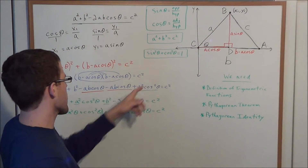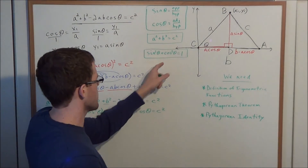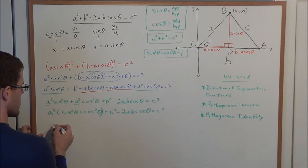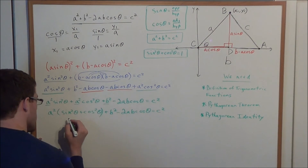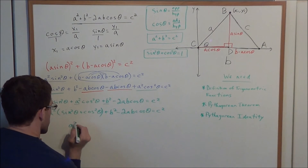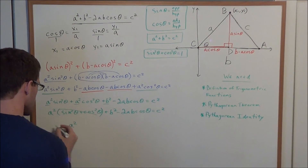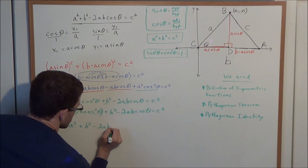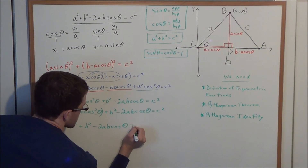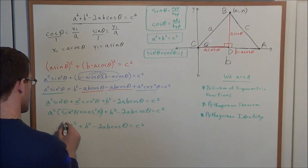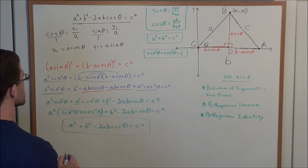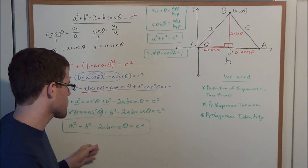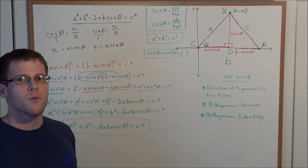By the Pythagorean identity, sine squared theta plus cosine squared theta equals one. So a squared times one is simply a squared, and we have a squared plus b squared minus two times ab cosine theta is equal to c squared, which is exactly our law of cosines that we were trying to prove. This concludes the proof and this video. Thank you all for watching and I hope that it was helpful.